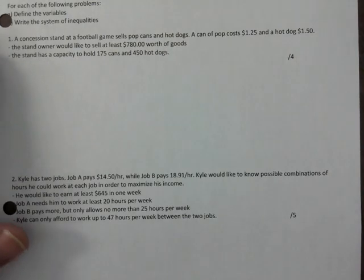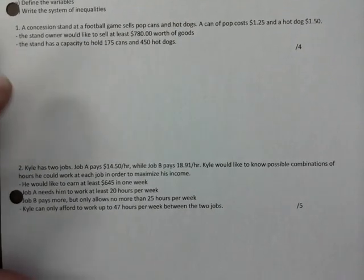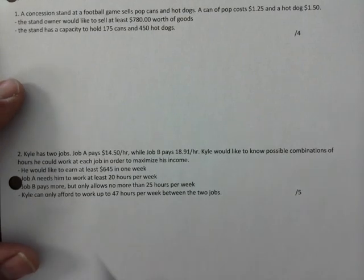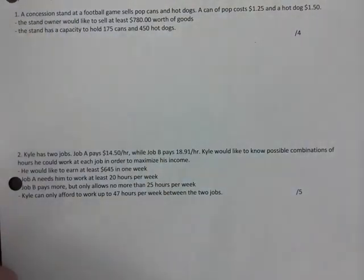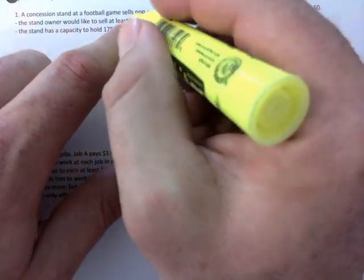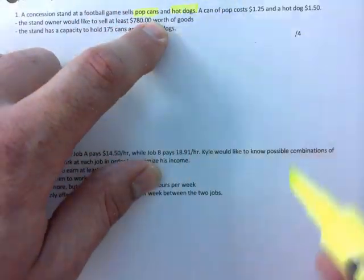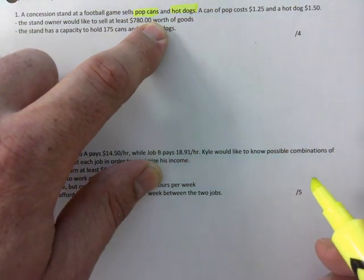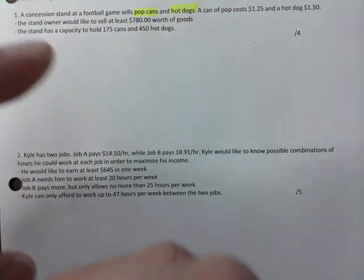My iPad was going full blast because I had to enter your inequalities there. So here — a football stand at a game sells pop cans and hot dogs. Those are your two variables, and now I'm looking for inequalities.